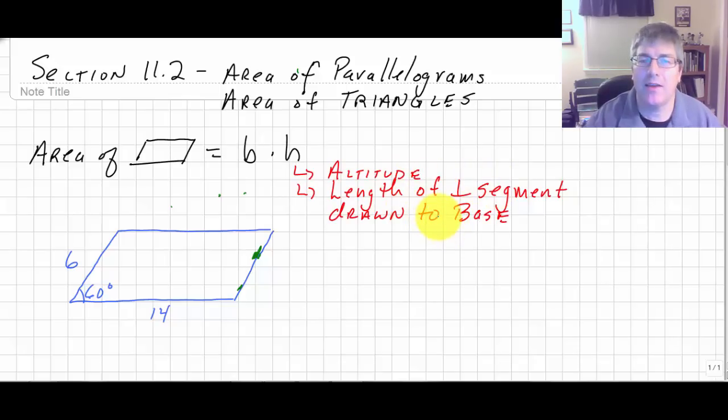With a square or rectangle, since those have right angles already, that altitude, that height is built in. However, in a parallelogram, not the case.